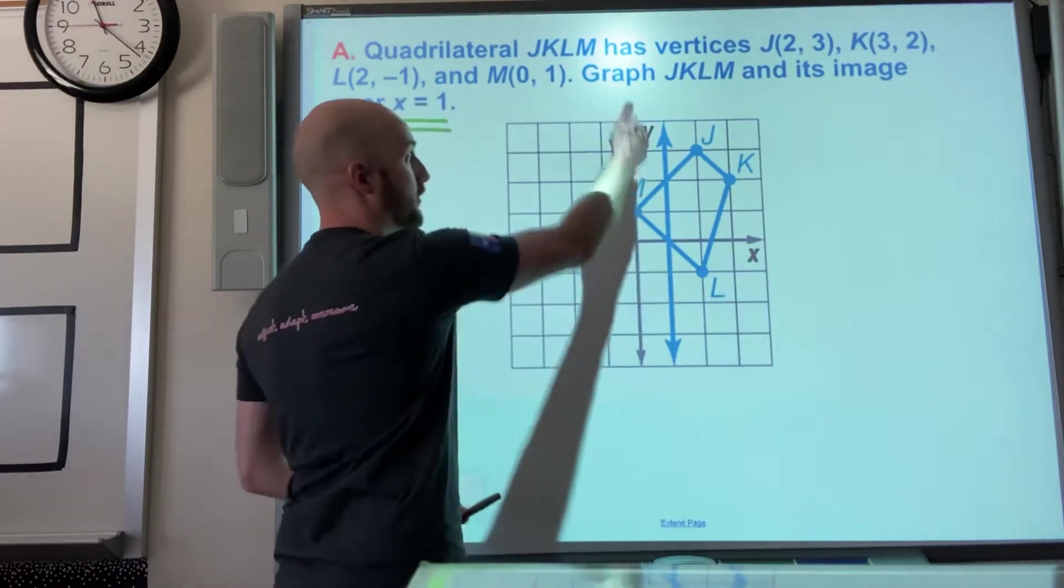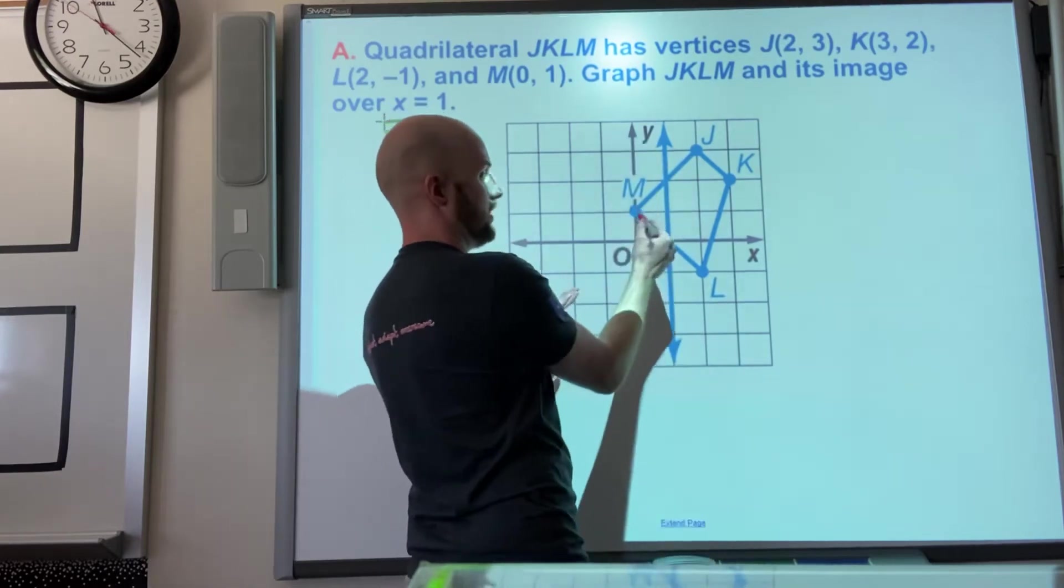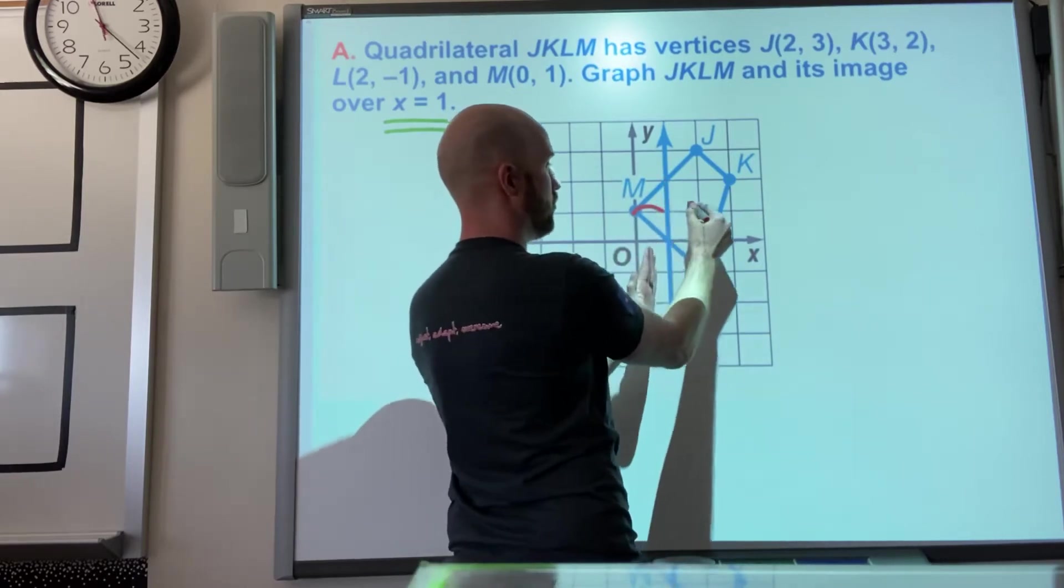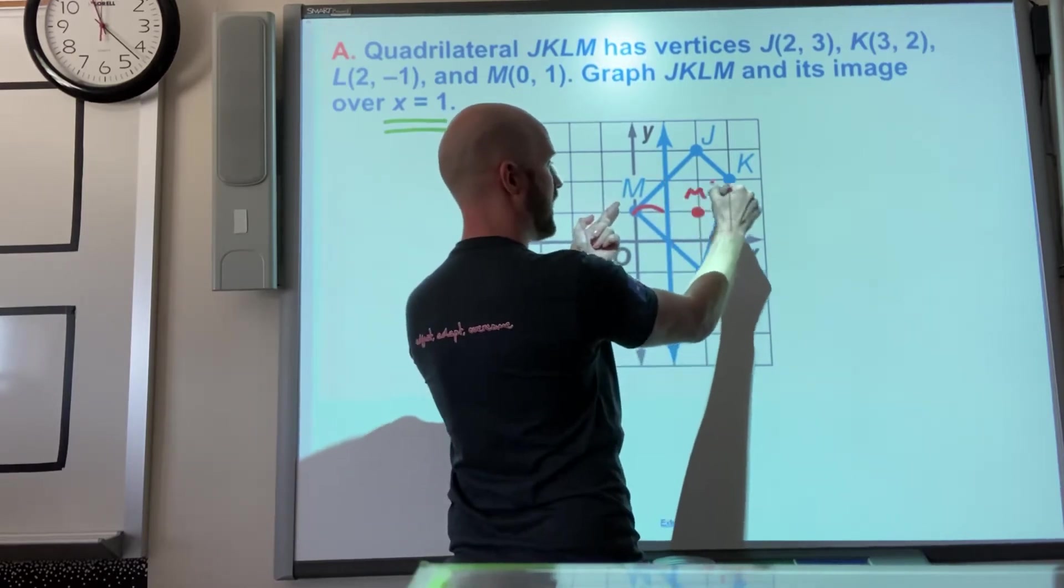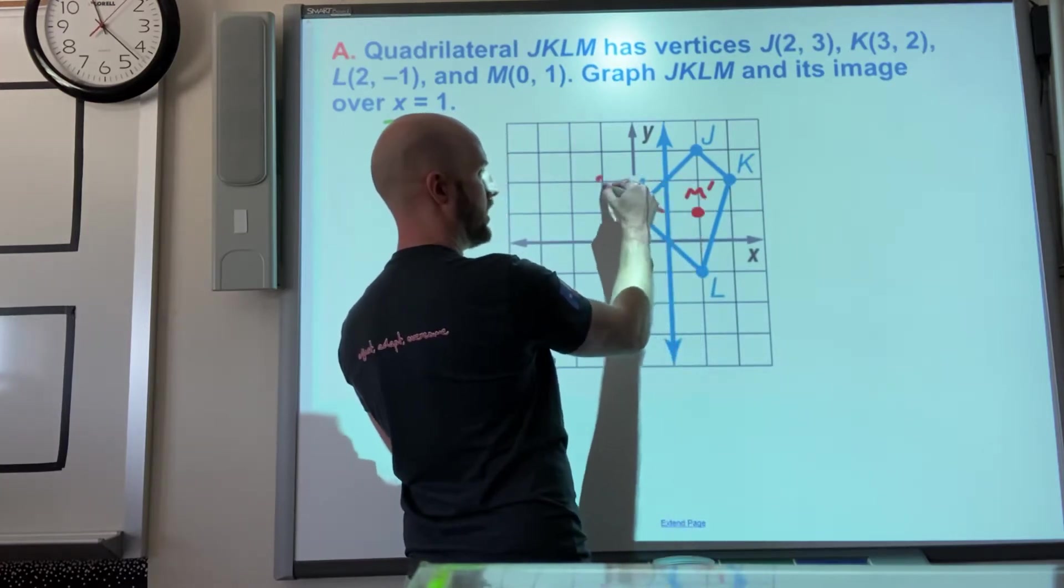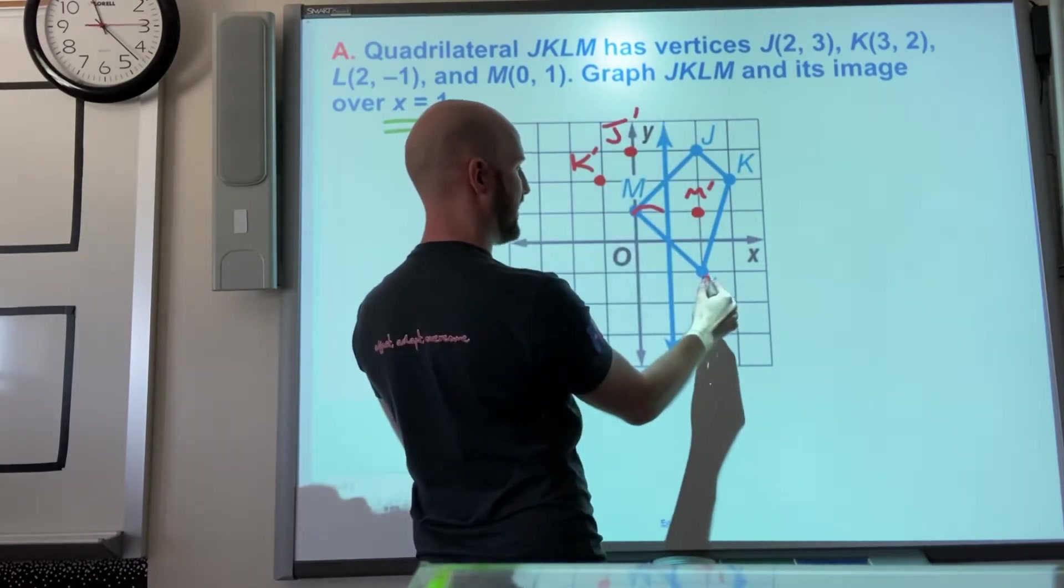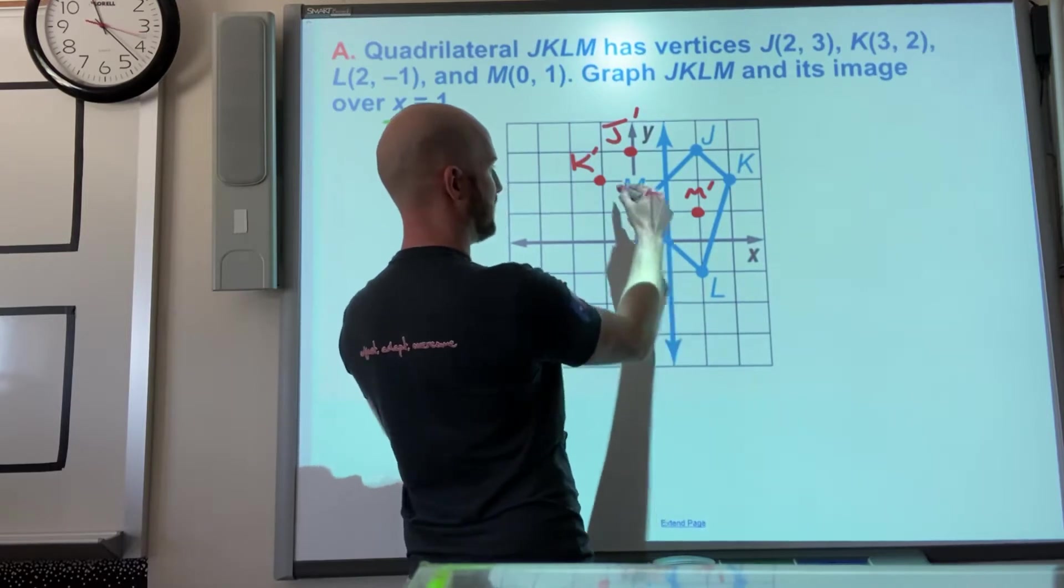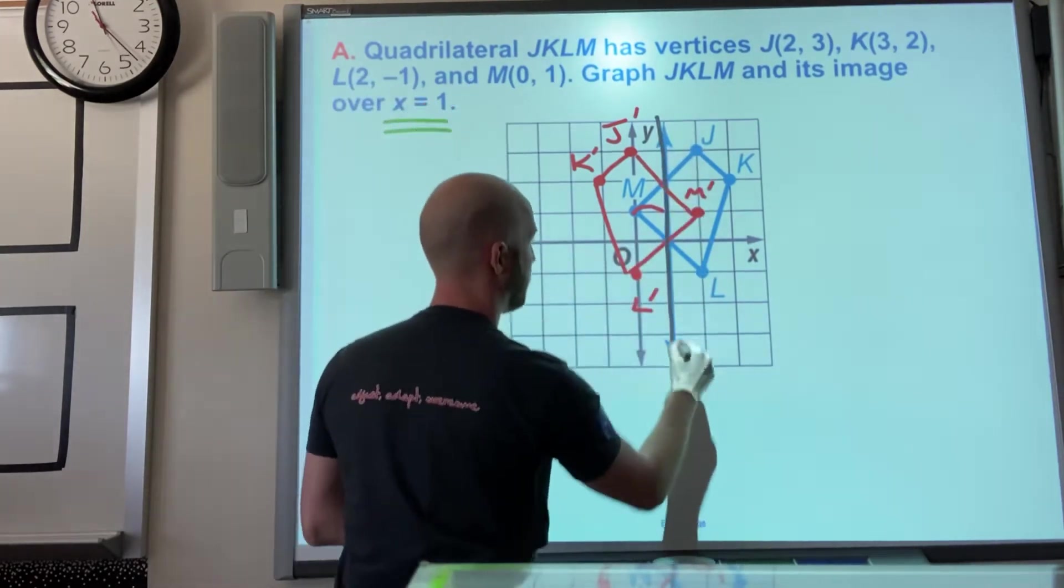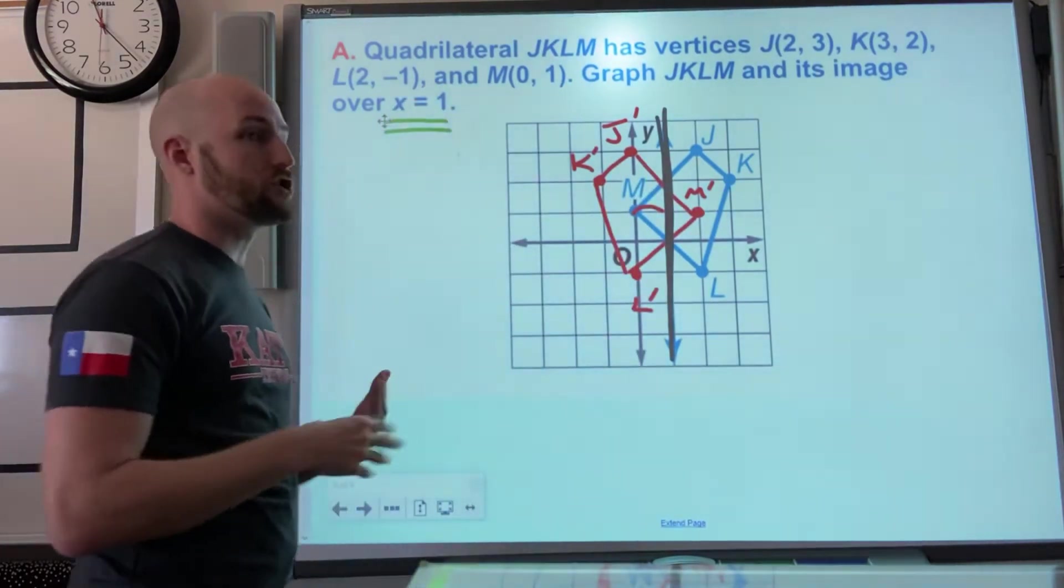However, I do not feel like there is a nice easy to follow rule for reflecting over a specific line that is not the x or y-axis. So here they've already drawn x equals one for me. Basically just take any point and it appears to be exactly one space from the reflection line. So we repeat one space on the other side. If I'm labeling that, that would be M prime. K appears two spaces away, so two spaces on the opposite side, K prime. And if I connect all of these, this should look like I could fold my paper and all those points would match up.